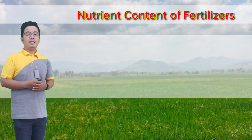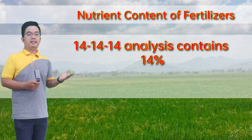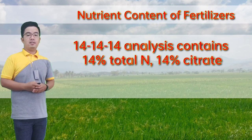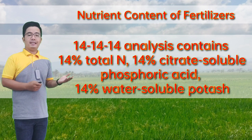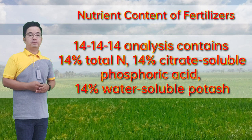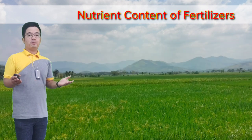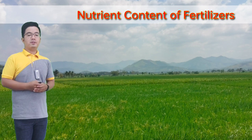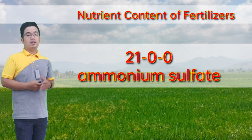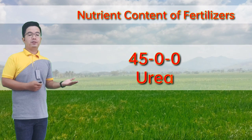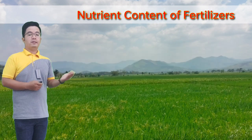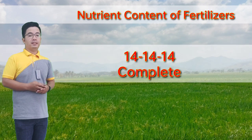Customarily, the phosphorus and potassium content are expressed as oxides of the elements. Thus, a fertilizer bag with a 14-14-14 analysis contains 14% total nitrogen, 14% citrate-soluble phosphorus, and 14% water-soluble potassium. The relative proportion is expressed in terms of fertilizer ratio, such as 21-0-0 for ammonium sulfate, 45-0-0 for urea, and 14-14-14 for complete fertilizer.